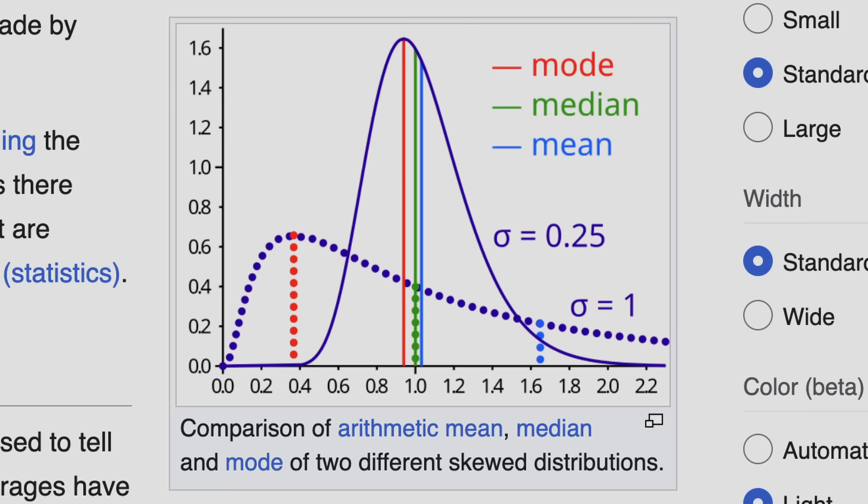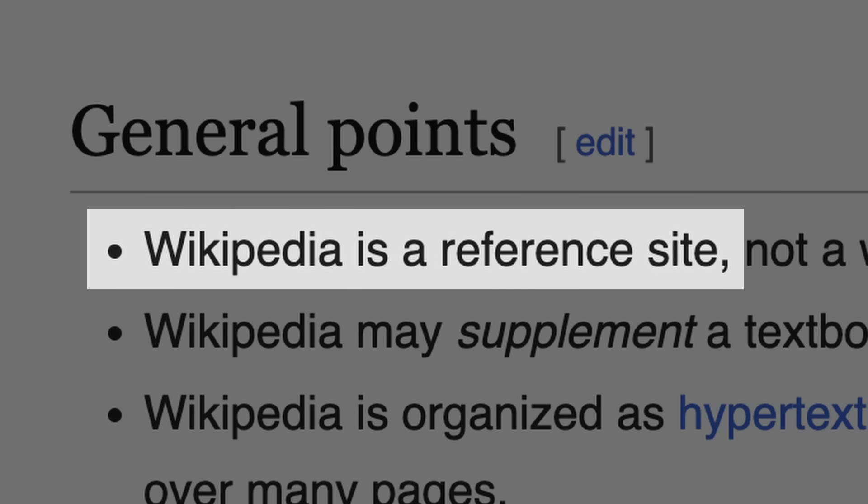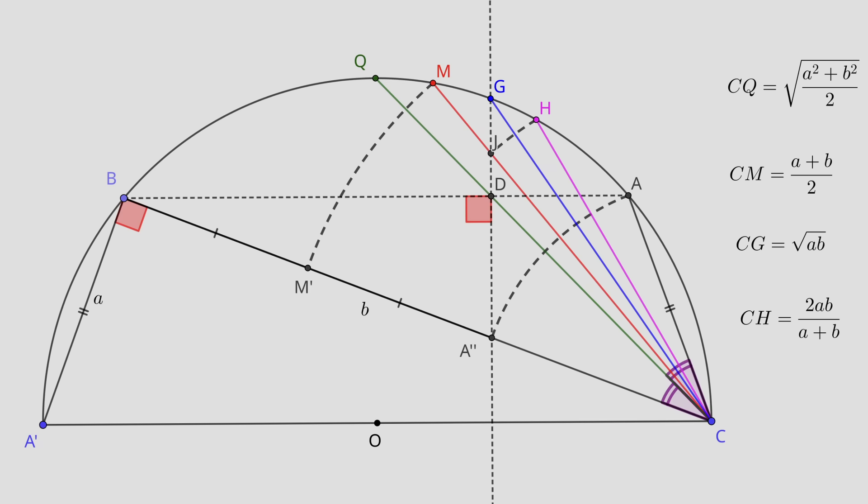Wikipedia is so bad at explaining math that they even have an entire article about it. Wikipedia is a reference site, not a website directly designed to teach any topic. Mystery solved then. Wikipedia should only be used as a reference site, except Wikipedia math articles usually aren't good references either.